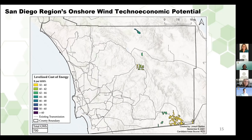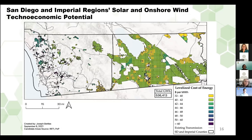Este mapa muestra el potencial tecnoeconómico regional total de la energía eólica terrestre a escala comercial. En comparación con la energía solar, el potencial eólico terrestre es mucho menor en la región y se muestra exclusivamente en las regiones no incorporadas. El potencial eólico terrestre se concentra en la zona sureste del condado, donde generalmente es menos costoso en relación con otros proyectos eólicos terrestres.